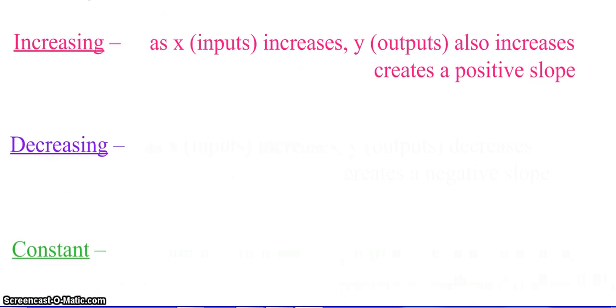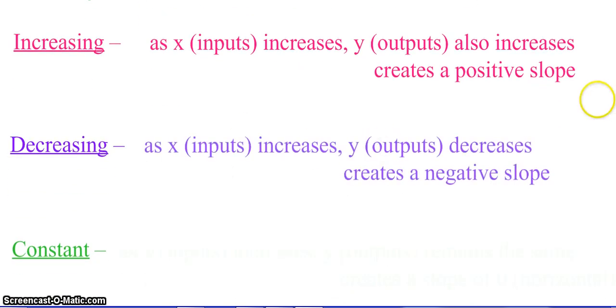Decreasing then — as your x values get bigger, your inputs increase, your y values are decreasing. This is going to create a negative slope, so as you're reading from left to right, your graph will be going in a downward motion.